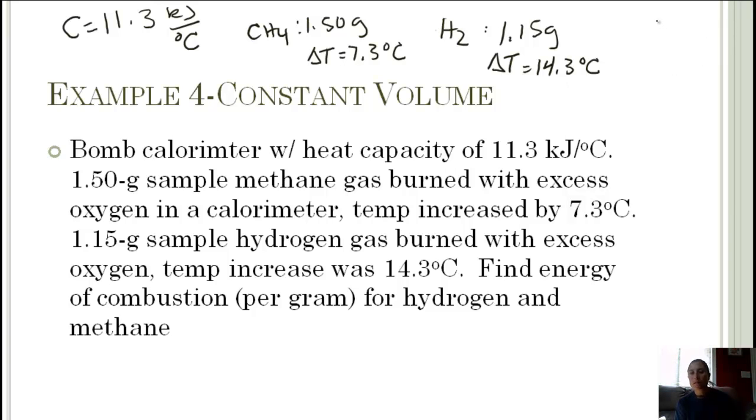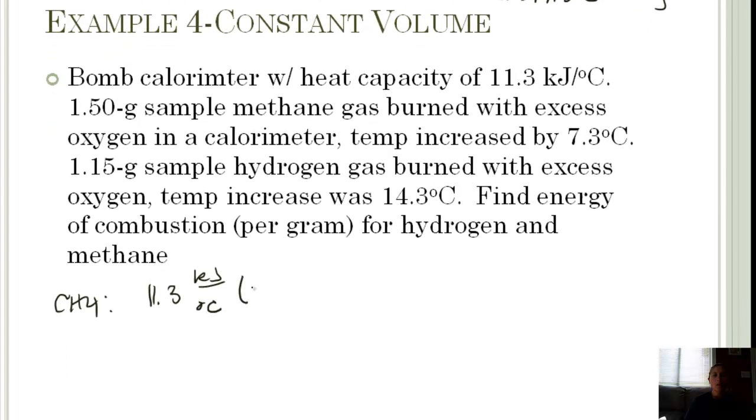We need kilojoules. I know that this is kilojoules per degree C. I have a change in temperature. If I multiply those together, that will give me kilojoules. Let's do methane first. For our kilojoules, we're going to take 11.3 kilojoules per degree Celsius and multiply it by the temperature change for the methane, which was 7.3 degrees C. It comes out to 82.49 kilojoules.